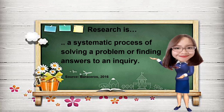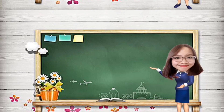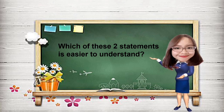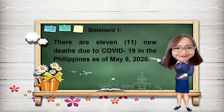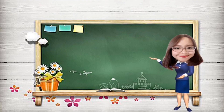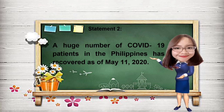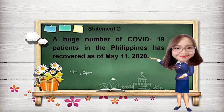Now that you are reminded about the difference between inquiry and research, let us identify which of these two statements is easier to understand. Statement number one: there are 11 new deaths due to COVID-19 in the Philippines as of May 8, 2020. Statement number two: a huge number of COVID-19 patients in the Philippines has recovered as of May 11, 2020. Which of these two statements is easier to understand?